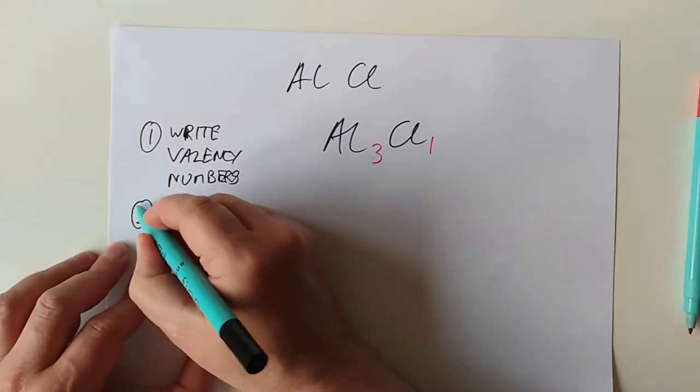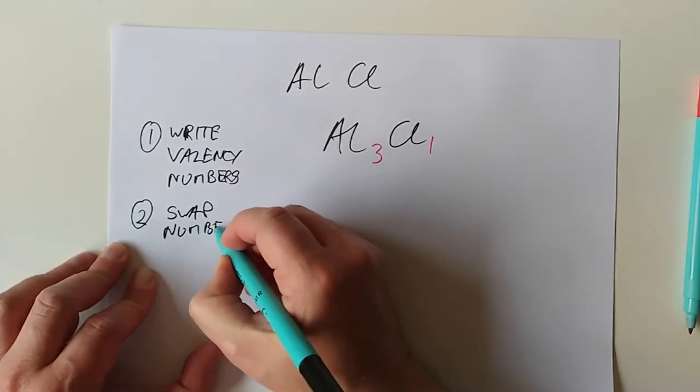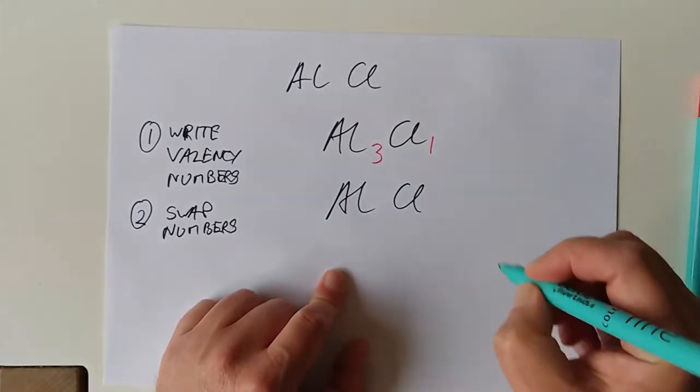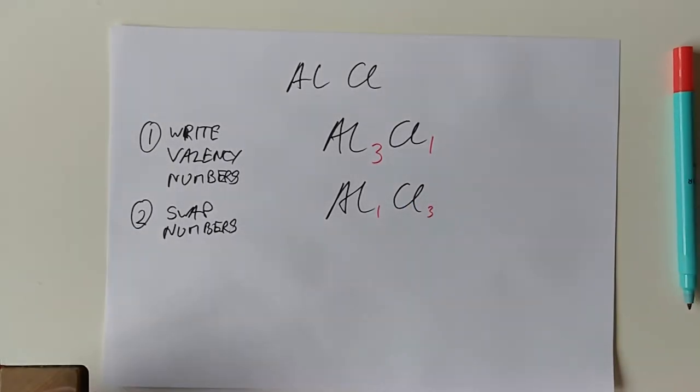That means that chlorine has a valency of 1 and aluminium has a valency of 3. So let's go back to this page here. Step 1, write the valency numbers. Let's do that. So we have aluminium that had a valency of 3. Chlorine's valency was 1. So that's stage 1. Great. Stage 2, swap those valency numbers round.